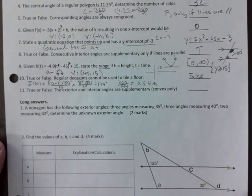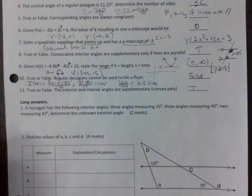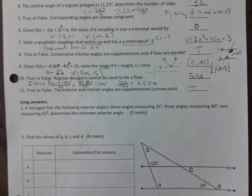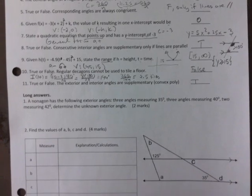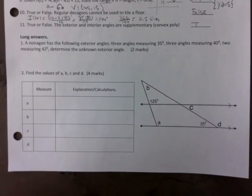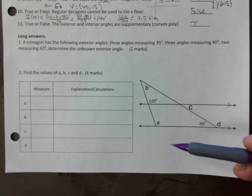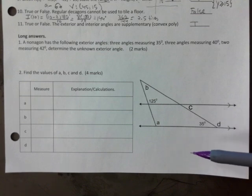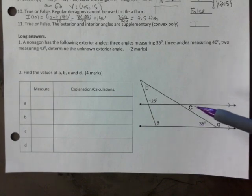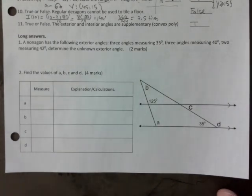True or false: the exterior and interior angles are supplementary — that is always true. We're not dealing with concave shapes in this course. You should also be prepared to solve problems involving inscribed polygons where lines go across and you have to use your knowledge of isosceles triangles and isosceles trapezoids — those are in the review booklet.